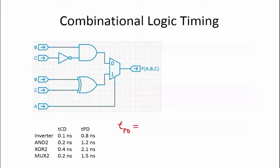For this circuit, the longest delay path is through the exclusive OR gate and the multiplexer. The sum of the propagation delay across these two gates is 2.1 plus 1.5, which equals 3.6 nanoseconds.